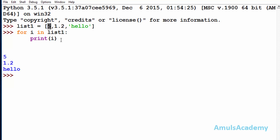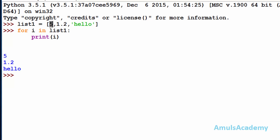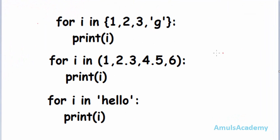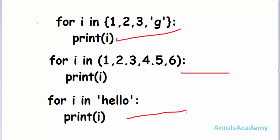This for loop works in the same way for tuples, sets, dictionaries, and strings. Here we can see a few examples — this is the for loop for a set, this is for tuples, this is for strings, and we can use the for loop in the same way with dictionaries also.